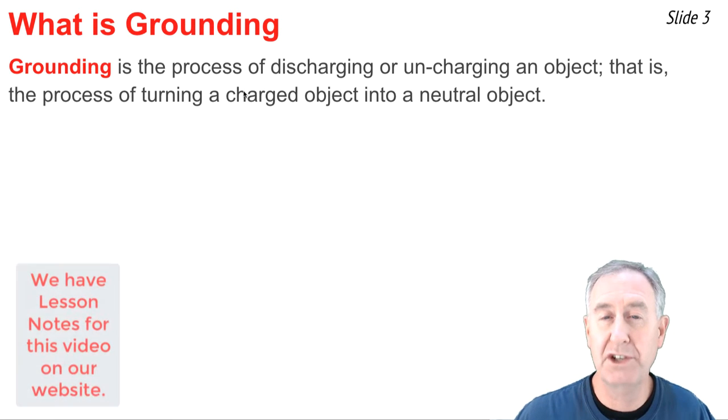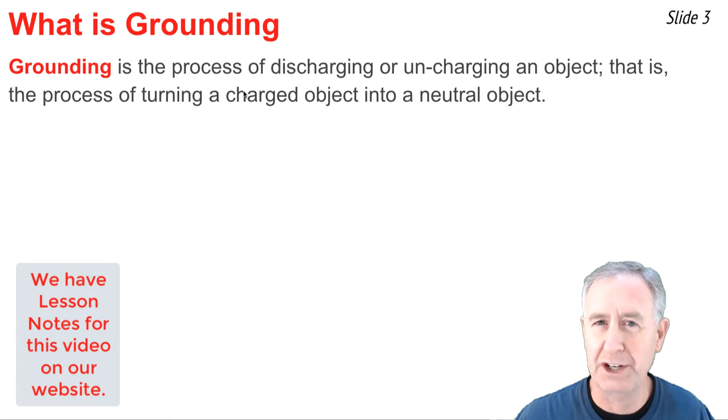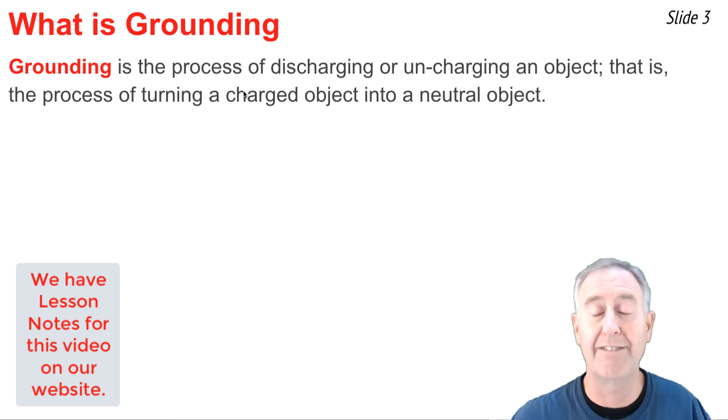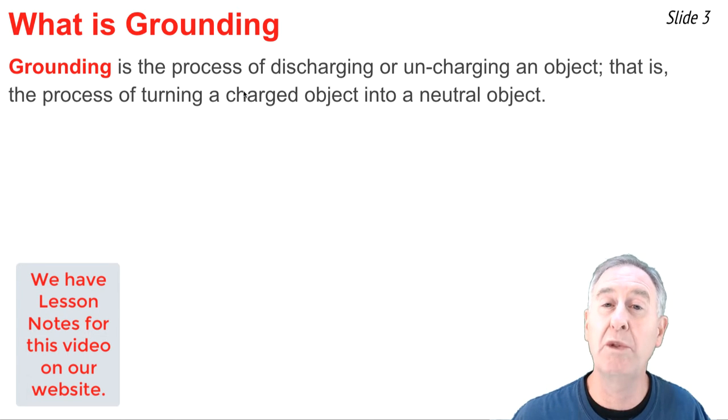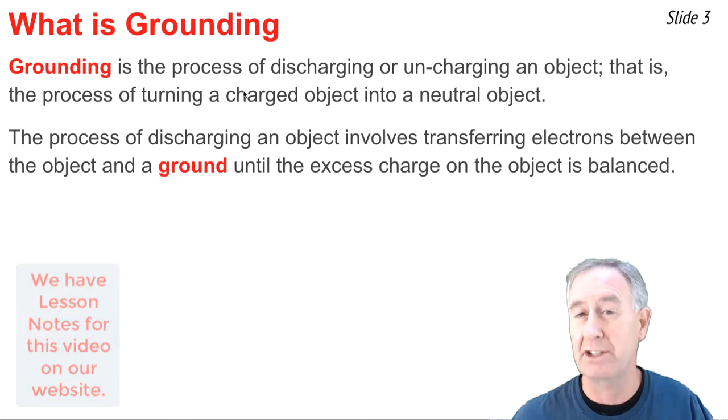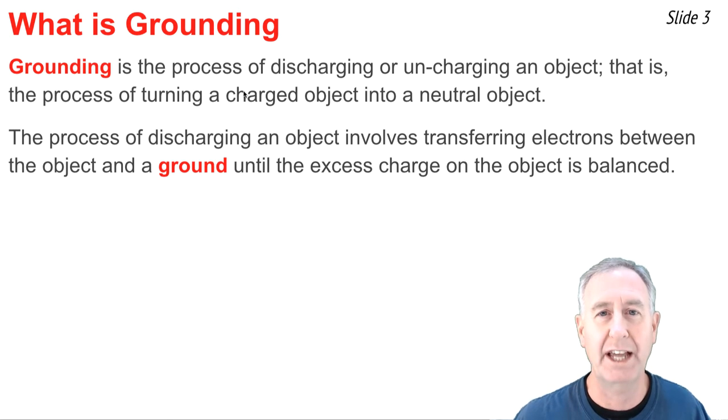Grounding is the process of discharging or uncharging a charged object. It is the process of turning a charged object into a neutral object. All objects have protons and electrons, but a charged object has unequal numbers of these two types of charges. It has an imbalance of positives and negatives. When we ground an object, we transfer electrons between the ground and the object until the imbalance of charge turns to a balance of charge, and the object has equal numbers of protons and electrons.